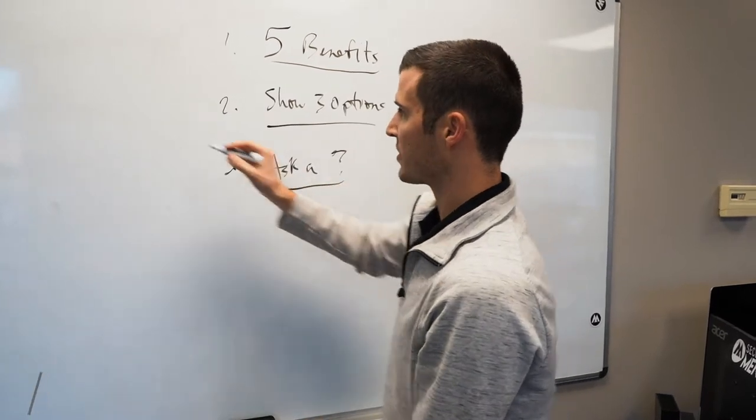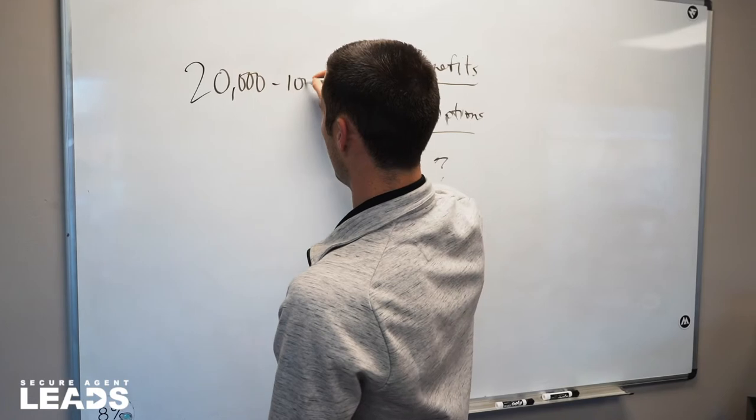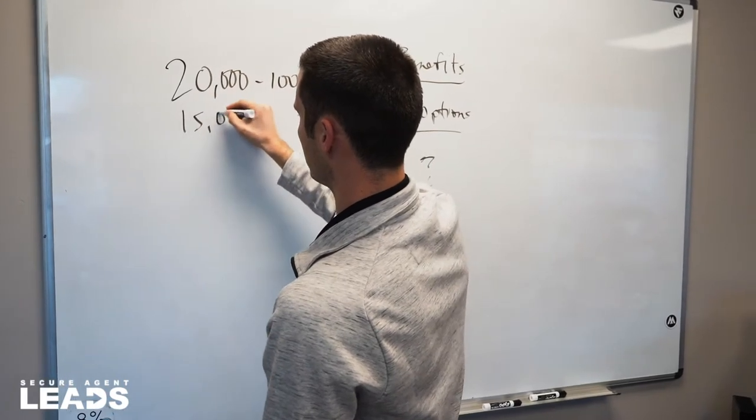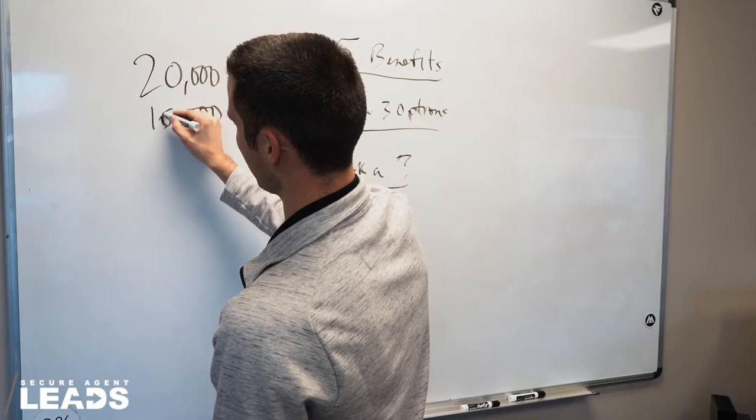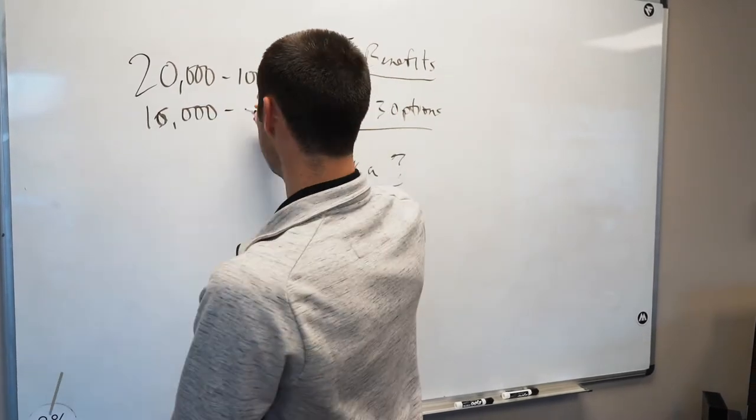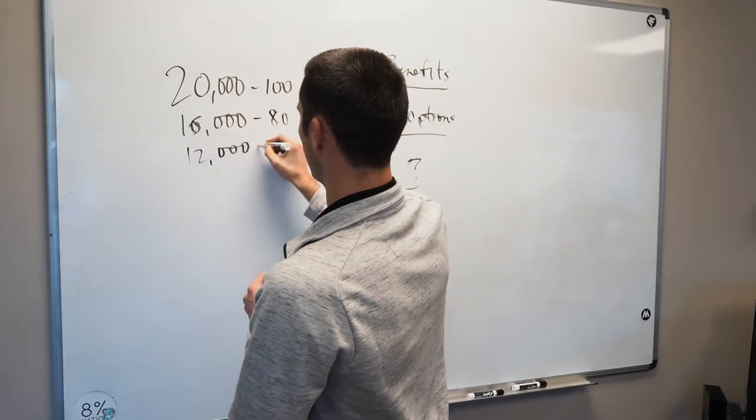And when I do that, I'm talking, hey, $20,000 for $100,000, $15,000. Sometimes I even like to do $16,000 and $12,000 because I can actually get a little more premium out of them. $16,000 for $80,000, $12,000 for $60,000.